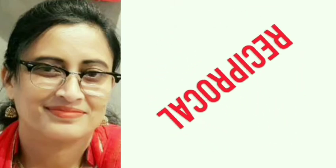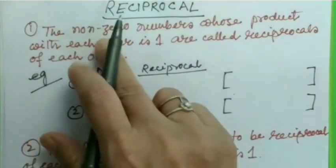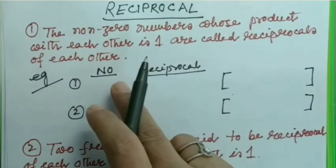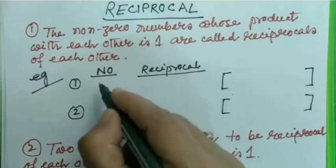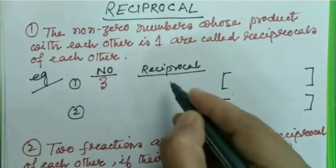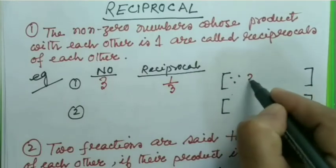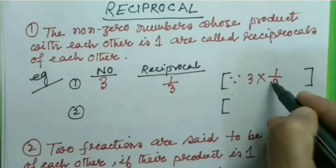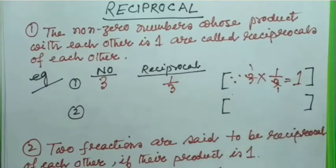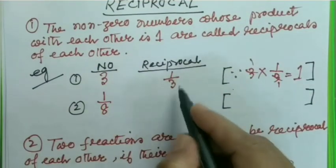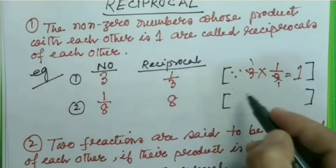the definition of reciprocal: Non-zero numbers whose product with each other is 1 are called reciprocals of each other. For example, if the number is 3, then its reciprocal will be 1/3, since 3 × 1/3 equals 1. If the number is 1/8, its reciprocal will be 8.